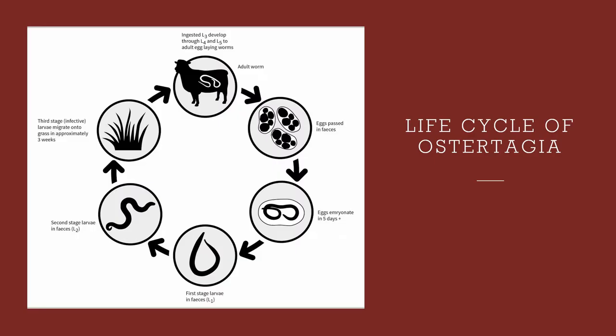Here I have presented an actual image of the life cycle of Ostertagia. First, we have an adult worm that leaves eggs. The eggs are passed in the feces, then embryonate in five or more days. Then we have the first stage larvae in feces, which converts to the second stage, then to the third stage where they migrate onto grass in approximately three weeks. Lastly, the cow or any ruminant ingests the larvae 3, which then develop to larvae 4 and larvae 5. Finally, the adults lay eggs and the cycle begins all over again.